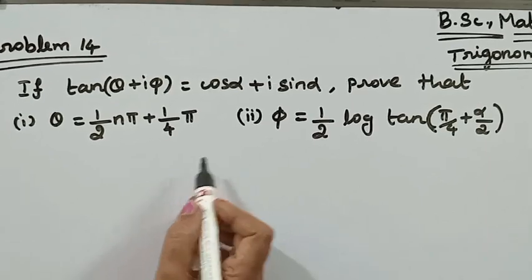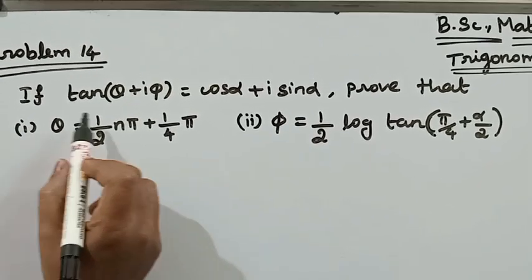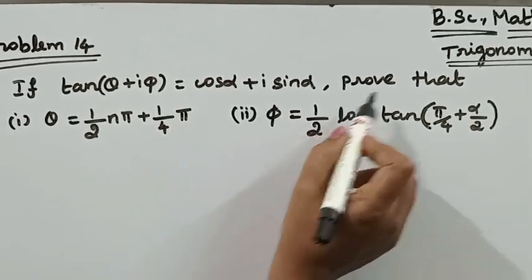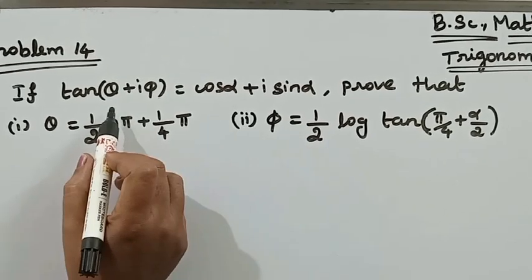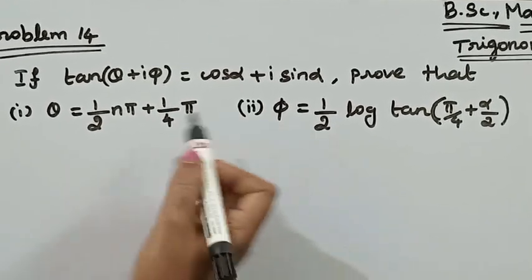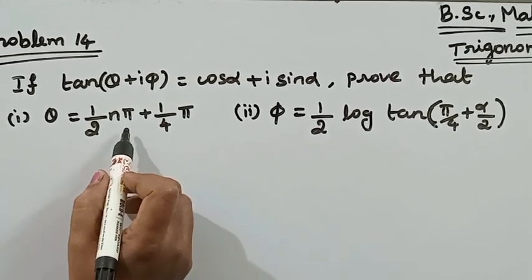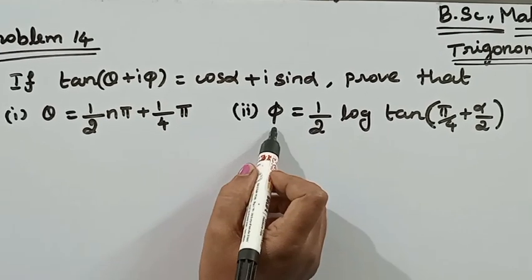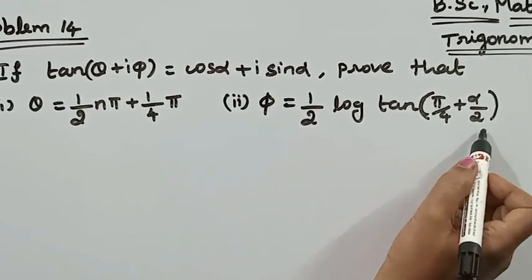Good morning students, we will discuss the next problem in the video. If tan of (θ + iφ) is equal to cos α + i sin α, then prove the two subdivisions: first, θ = ½(nπ + π/4); second, φ = ½ log(tan(π/4 + α/2)).